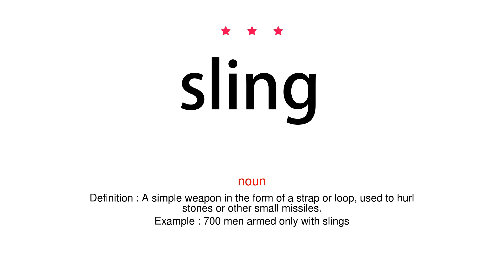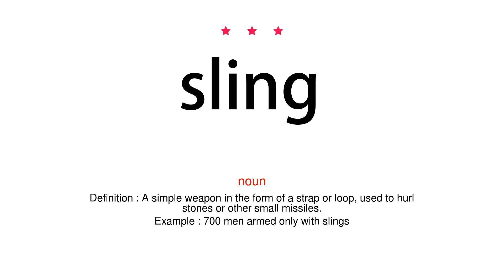Noun. Definition: A simple weapon in the form of a strap or loop, used to hurl stones or other small missiles. Example: 700 men armed only with slings.